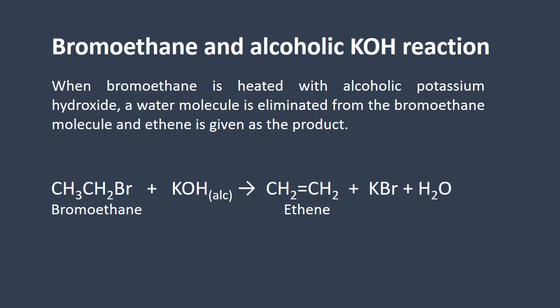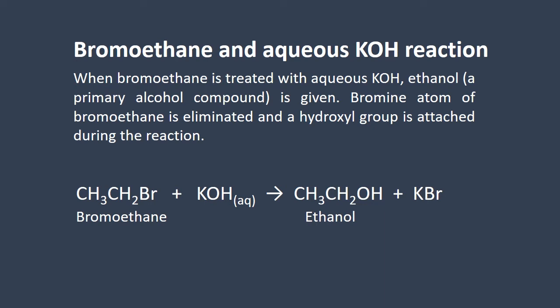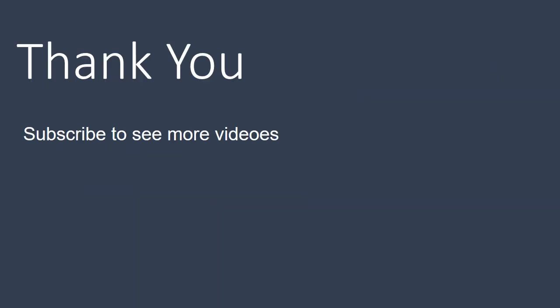Now we look at the reaction of bromoethane and aqueous potassium hydroxide. When bromoethane is treated with aqueous potassium hydroxide, ethanol, a primary alcohol compound, is given. The bromine atom of bromoethane is eliminated and a hydroxyl group is attached during the reaction.